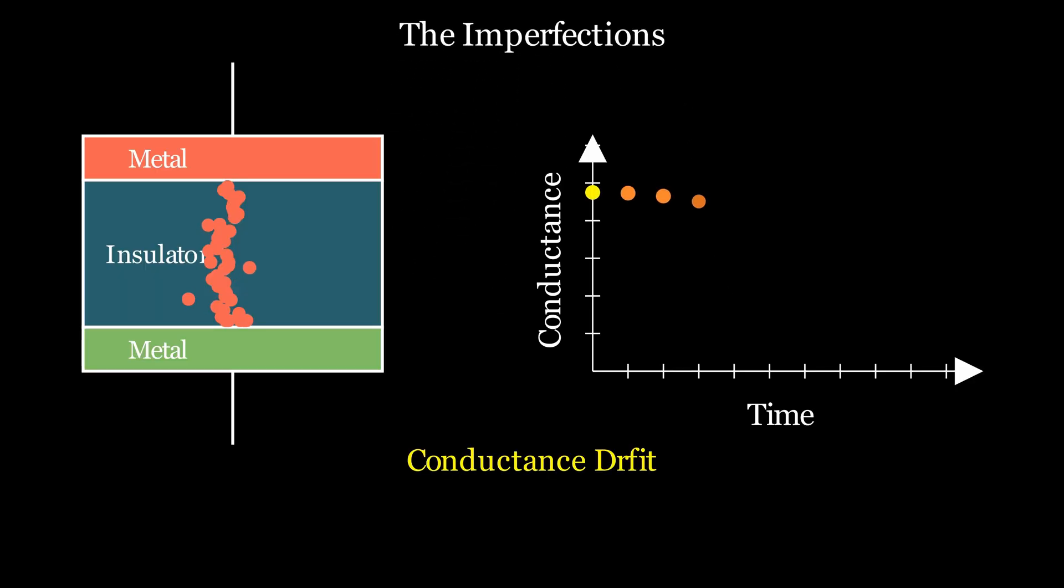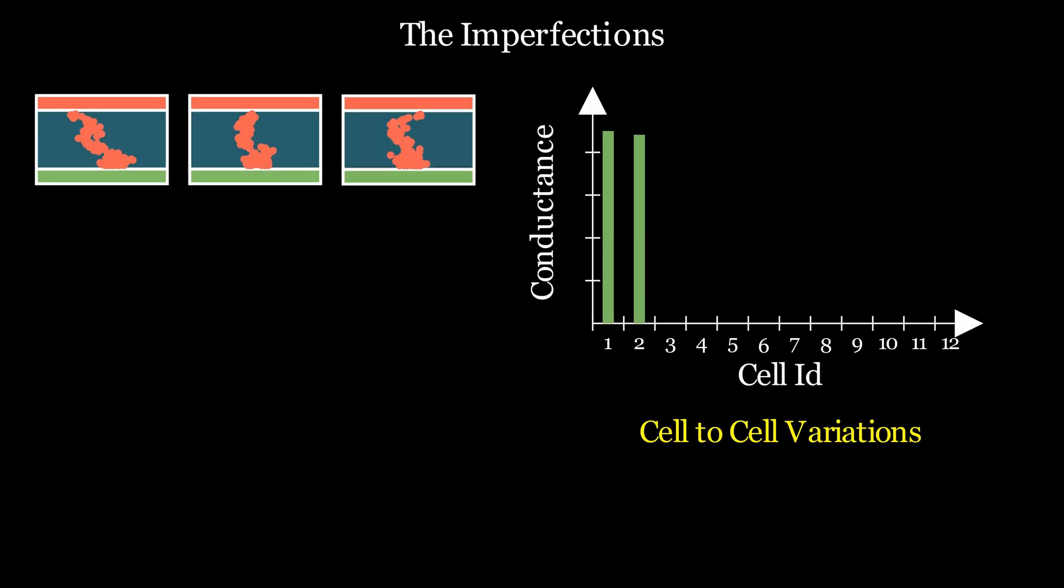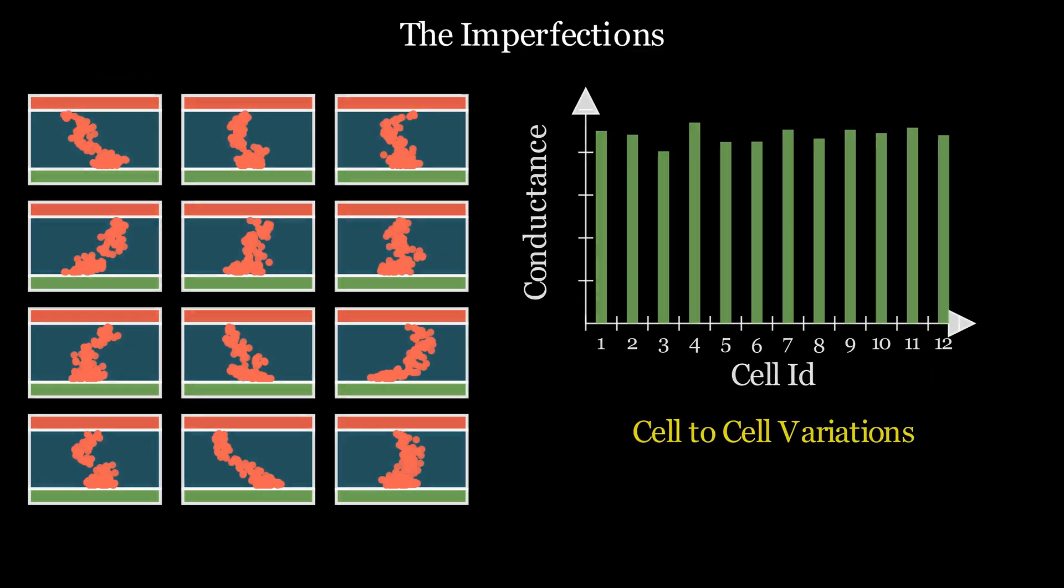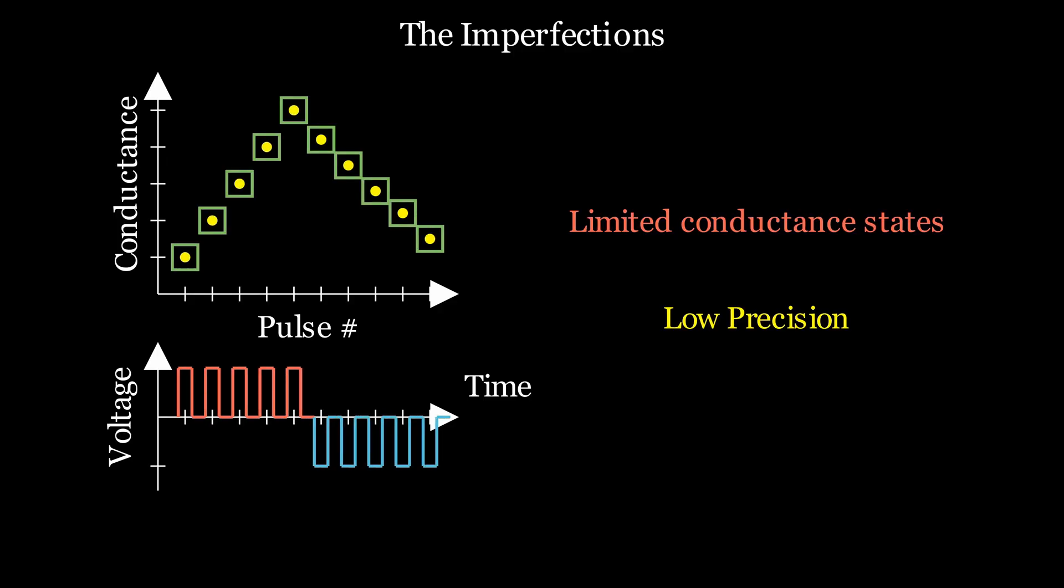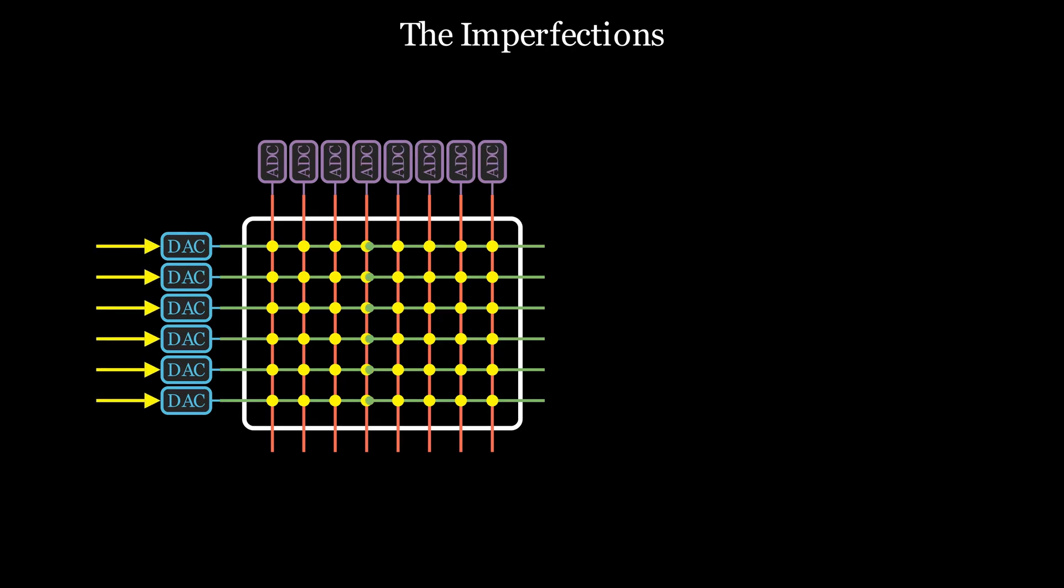Of course, resistive memory isn't perfect. Its performance is hampered by issues like conductance drift, read and programming noise, cell-to-cell variations, and low precision due to limited number of discrete conductance states. Analog computing also requires ADCs and DACs, adding cost and complexity.